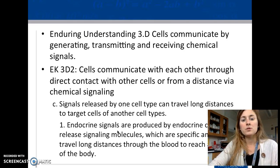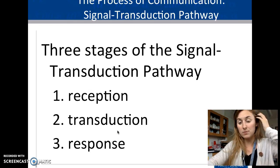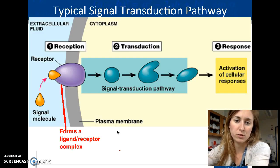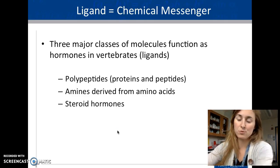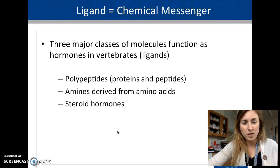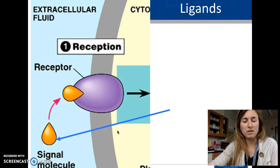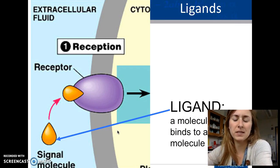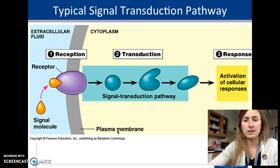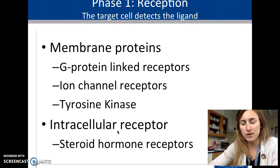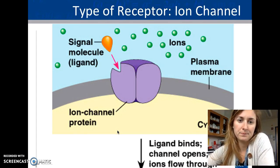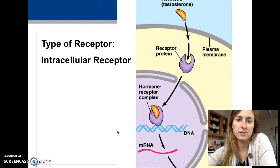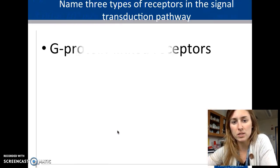Signal transduction involves reception, transduction, and response. There are different types of molecules that can function as the ligand — the signaling molecule. The key receptor types are G protein-linked receptors, ion channels, and tyrosine kinase receptors.